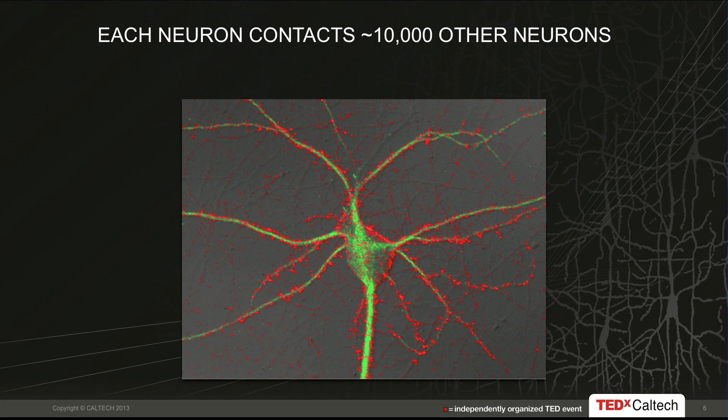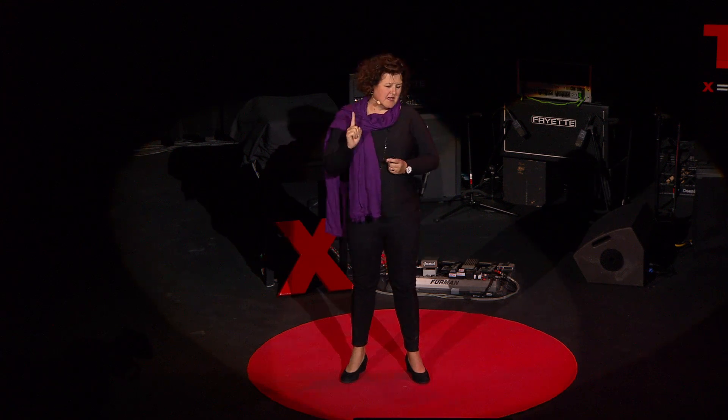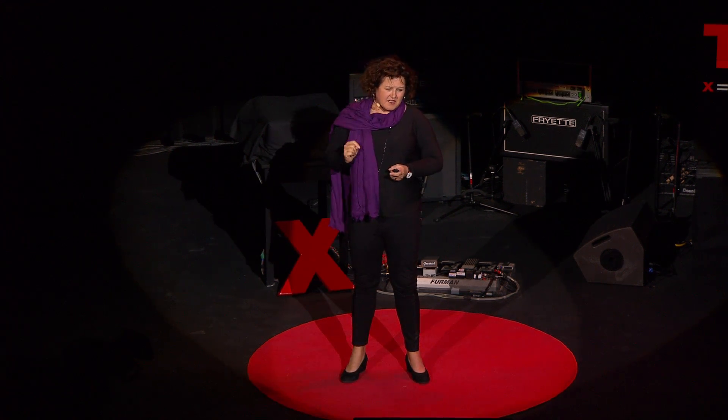Most other cells in the body touch only a handful of cells, but neurons contact 10,000 other neurons. That's shown in this image here, where you see a neuronal cell body in green and the processes or cable emerging. In red, you see individual synapses. And if you looked at just this single cell, that single cell talks to 10,000 other cells at the synapses.